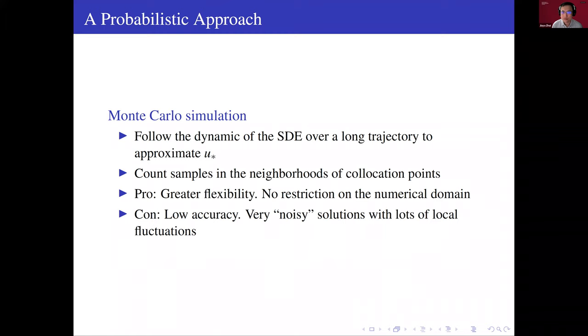We can just run several trajectories of this SDE for a very long time. And then we just count the numbers of points on these trajectories in the neighborhoods of the collocation points where we want to solve the PDE, the density function. So this method has great flexibility. We can solve it at any point. But the disadvantage is the result will be very noisy.